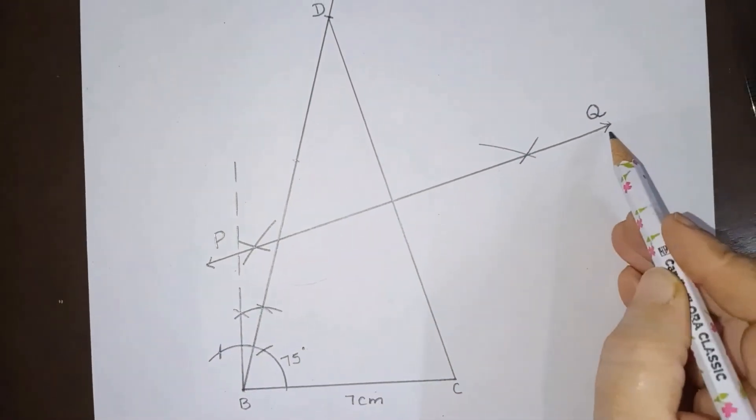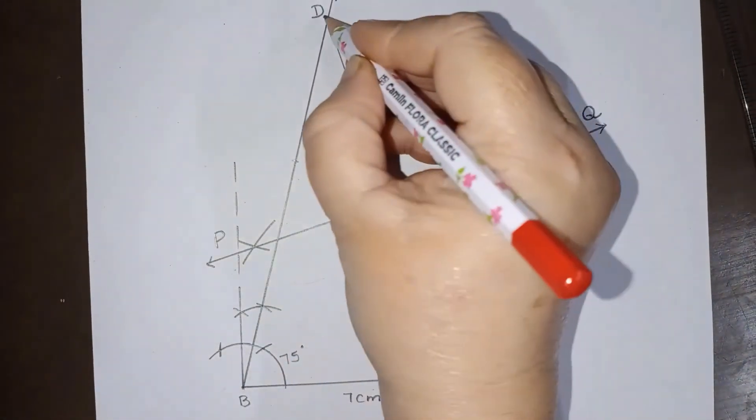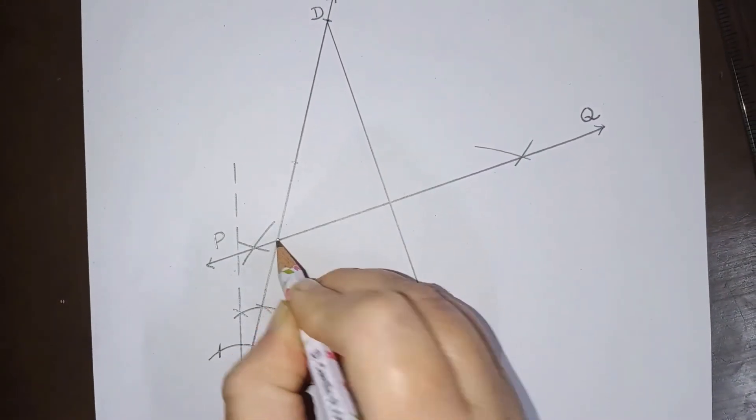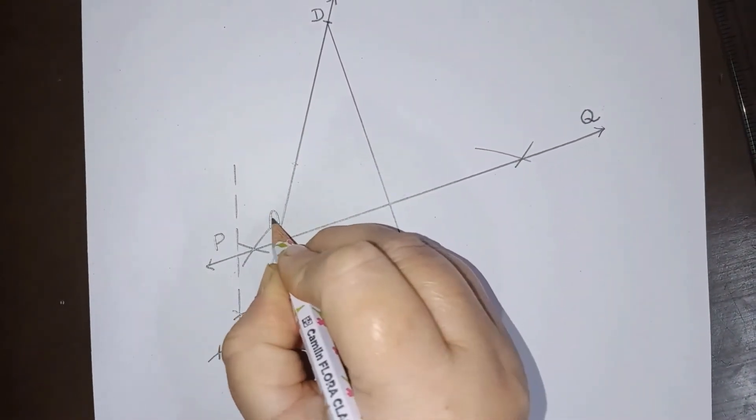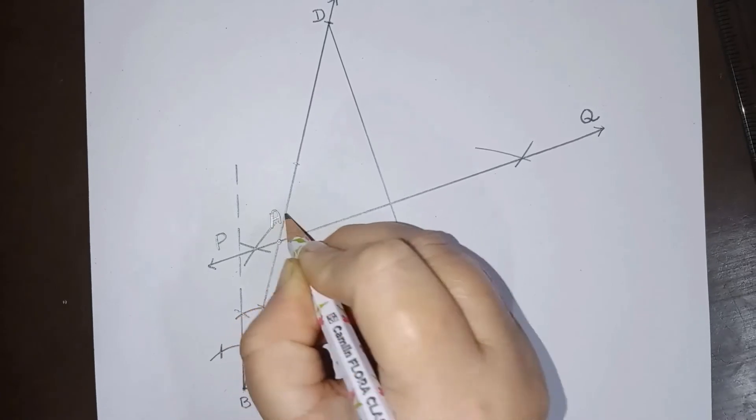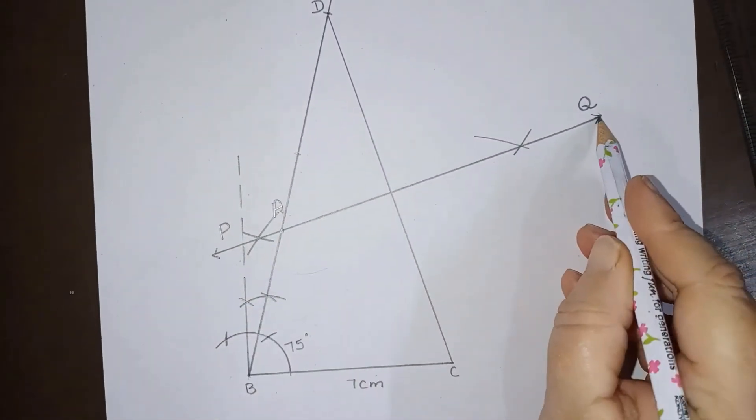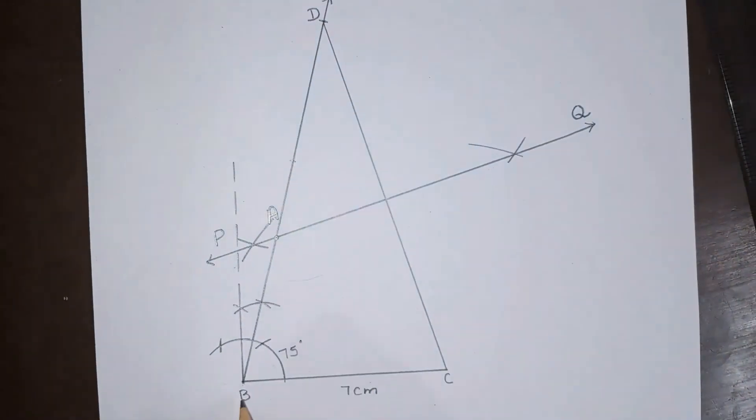Now this perpendicular bisector is meeting, is intersecting BD here. So let this point be A. So we are taking the point where the perpendicular bisector is intersecting BD.